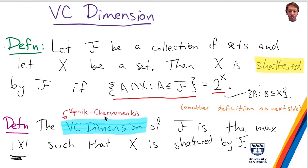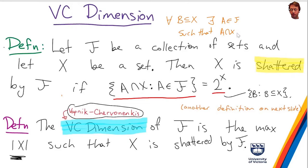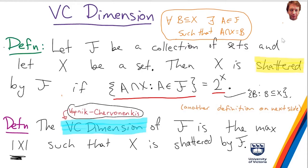VC stands for Vapnik and Chervonenkis. Another way of saying that f shatters x: for every subset b of x, there exists an a in f such that a intersect x equals b. This is just rewriting the definition in a slightly different way. The way to check it is to look at a subset of x and ask: is there something in f that can represent subset b as x intersect a?